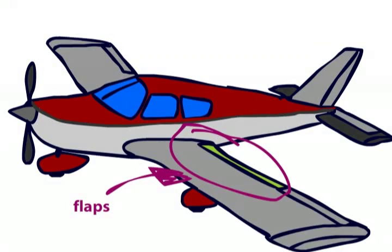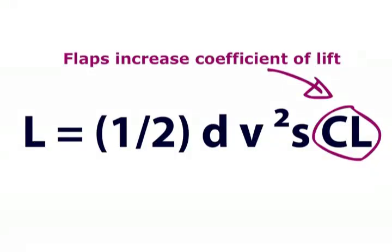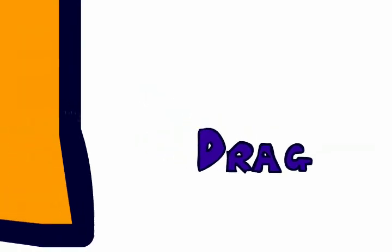You can also decrease your takeoff distance by extending your flaps a little bit. As we have already discovered, a small amount of flap increases lift a lot, by increasing the coefficient of lift. It also increases drag a little, but this is greatly overshadowed by the bonus lift.